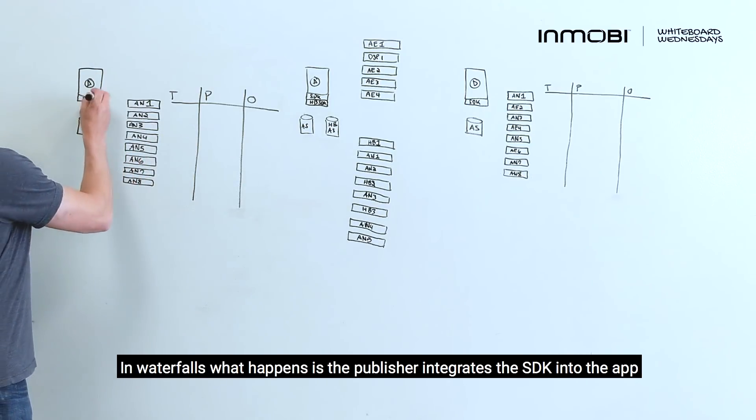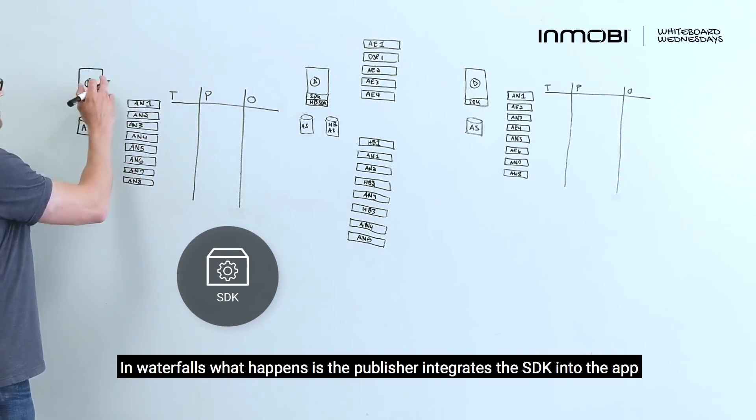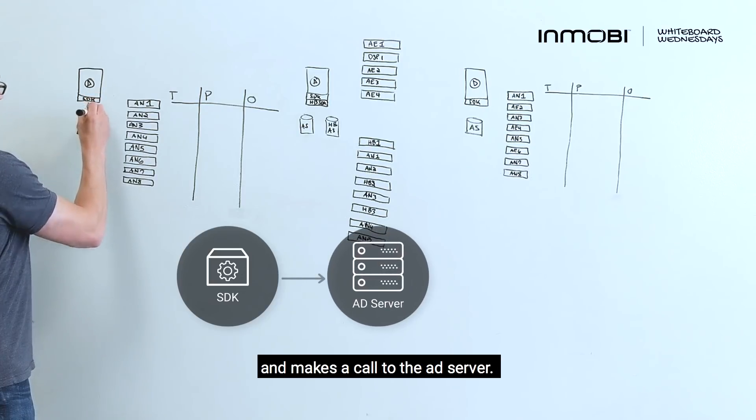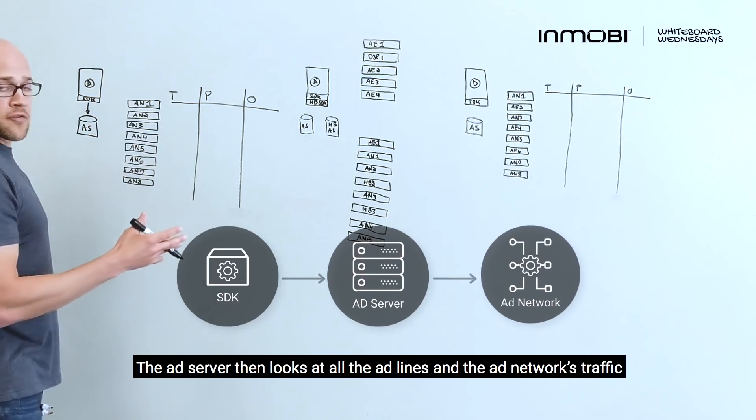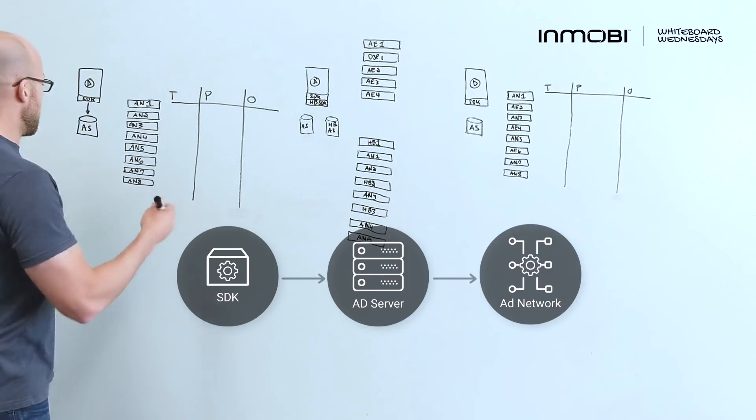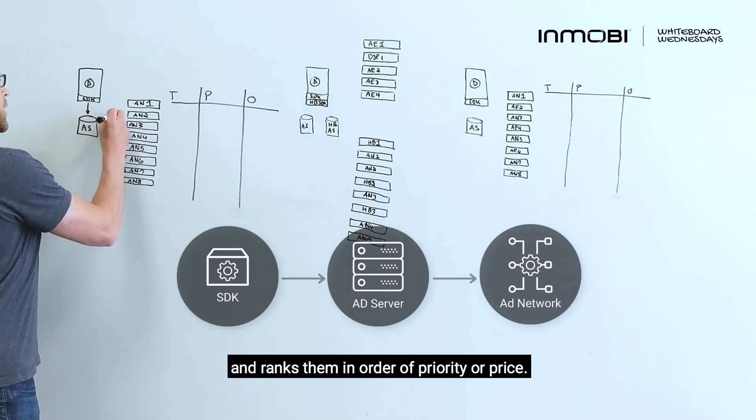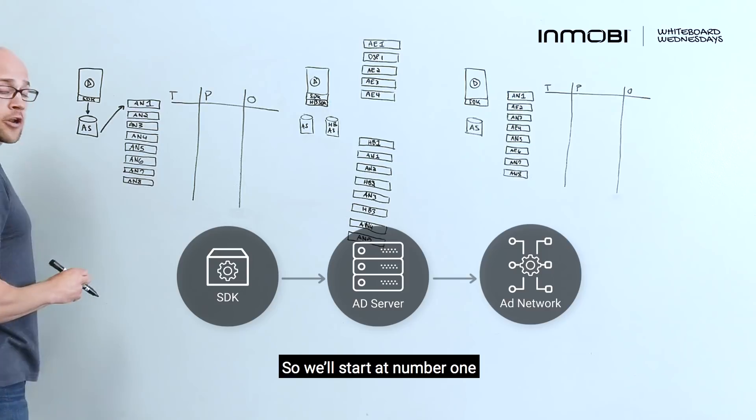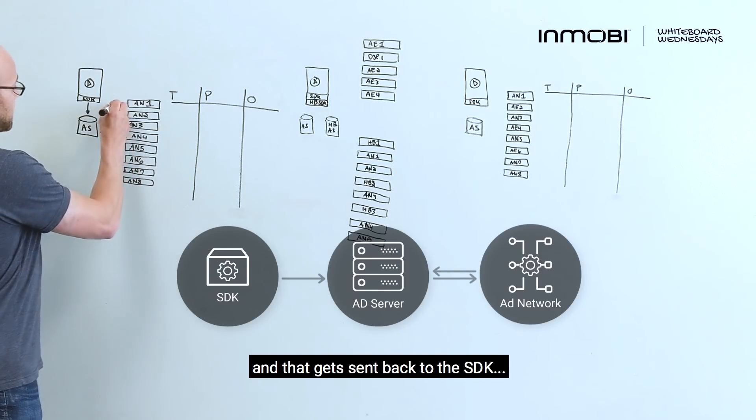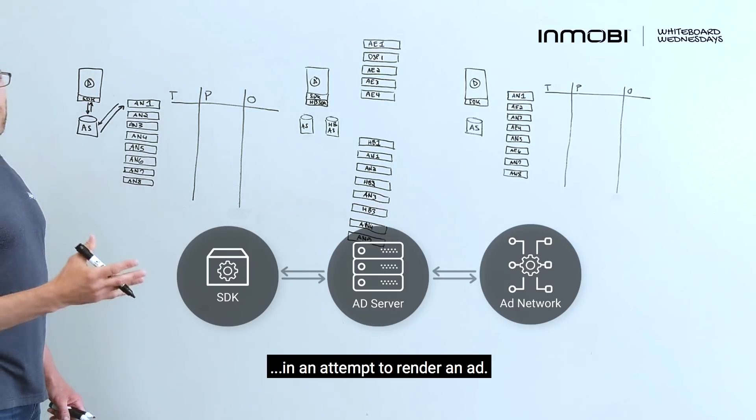In waterfalls, what happens is the publisher integrates the SDK into the app and makes a call to the ad server. The ad server then looks at all the ad lines and the ad networks trafficked and ranks them in order of priority or price. So we'll start at number one and then that gets sent back to the SDK in an attempt to render an ad.